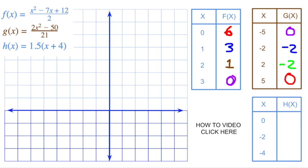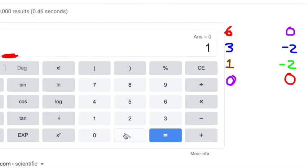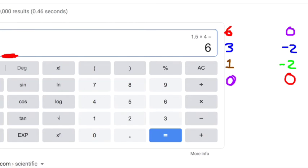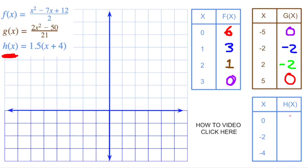Last box. What if x is 0, negative 2, negative 4 for this relation called h of x. So we got one and a half times... All right, when x is 0, one and a half times 4. 1.5 times 4 is 6. So when x is 0, h of x is 6.